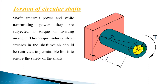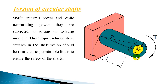Consider a circular shaft with radius R and length L, fixed at one end and subjected to a torque at the other end. Due to this applied torque, if the shaft is not rigid, it will undergo some angular deformation, and this deformation is shown in the figure.